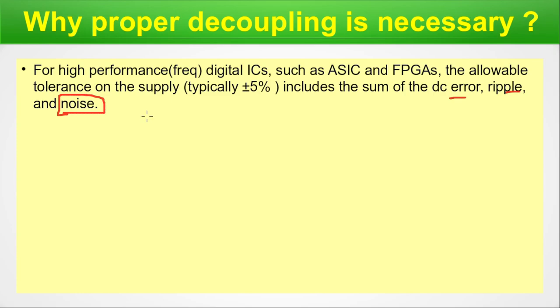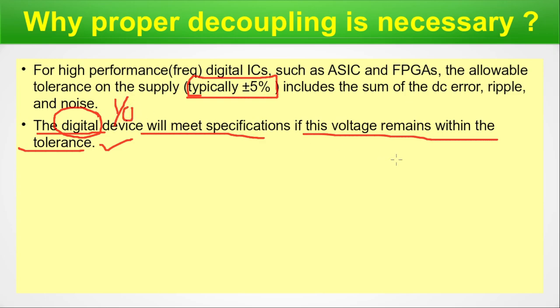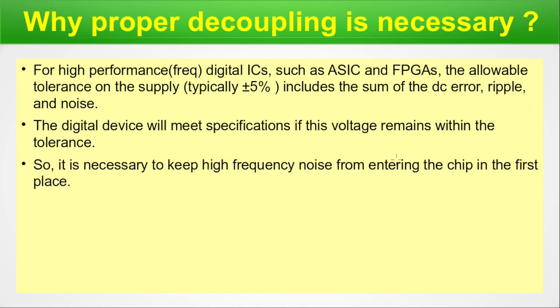The noise includes crosstalk noise — one line carrying current can induce noise on another line — and in some applications like space systems, there will also be cosmic noise. Generally, noise can come from anywhere, within the circuit or from external sources, and altogether it can impact circuit performance. The digital device will meet specification if the voltage remains within tolerance — that 5% we talked about — deciding whether the digital one or zero operation is correct.